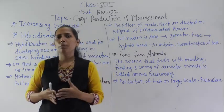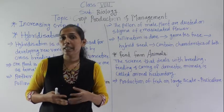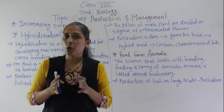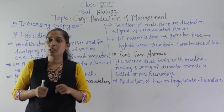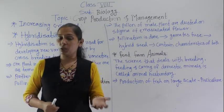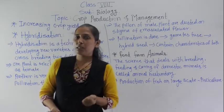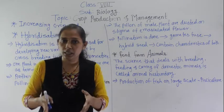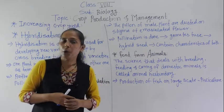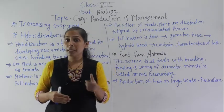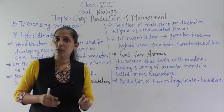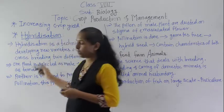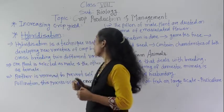Scientists are performing different experiments including seed breeding. Seed breeding means controlling reproduction in plants to get the desired quality of seed. This process leads us to what is called hybridization, which we will discuss next.